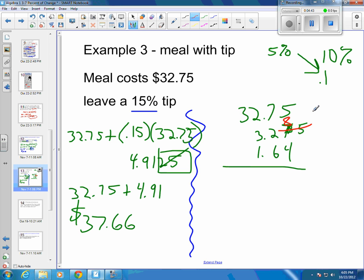So 32.75 plus the 10%, which is 3.28, since we rounded, plus the 5% more, so that's 1.64, and we end up with $37.67 tip. So in this case, we're one cent off from the other one, and whatever the case is, you usually round when you're doing tips anyway.